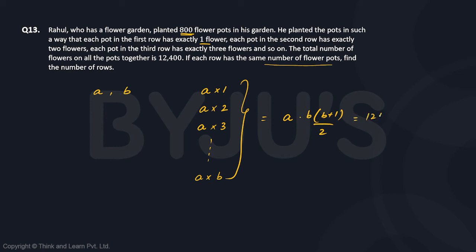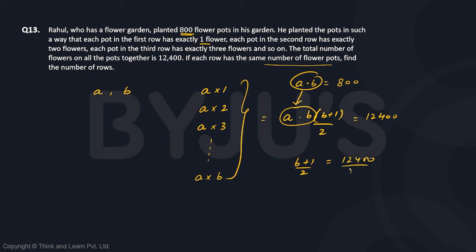The total number of flowers is given as 12400, and the total number of flower pots is given as 800. Since each row has 'a' pots and there are 'b' rows, we get the equation a × b = 800. Substituting a × b into the earlier expression gives (b+1)/2 = 12400/800.